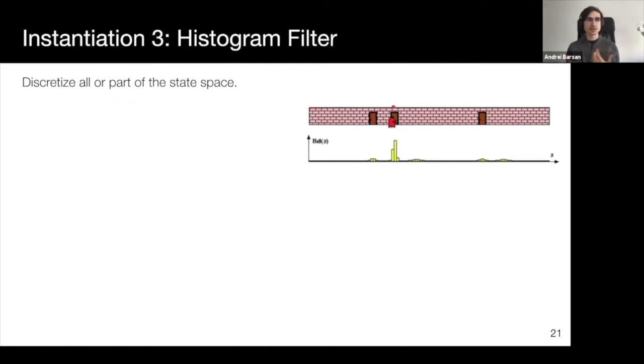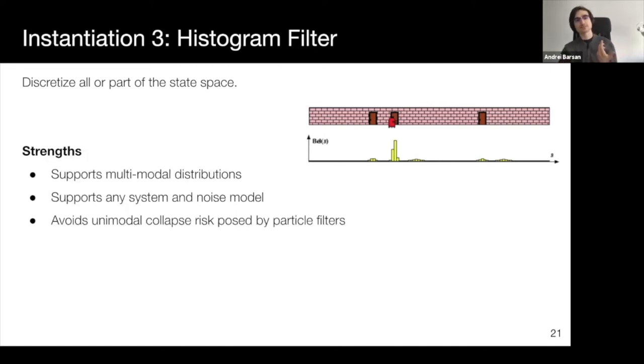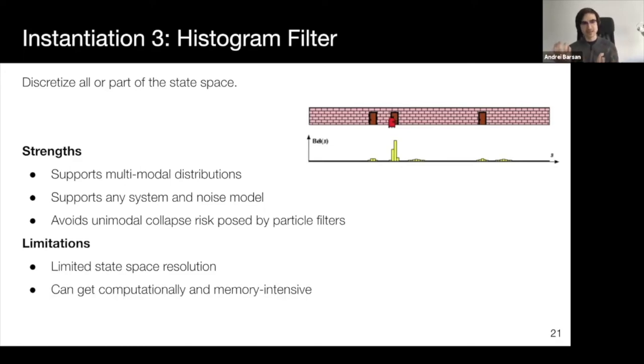Histogram filters simply discretize all or part of the state space into a set of cells. Similar to particle filters, they can support any distribution over the belief space since you're no longer bound by a parametric solution. At the same time, histogram filters can avoid the unimodal collapse risk that particle filters have and eliminate the need to choose the number of particles and tune this hyperparameter. However, by discretizing your state space, you end up limiting the resolution of your estimate. At the same time, you have to store a very large table of probabilities, which can become computationally and memory intensive as the dimensionality of the state space becomes higher. If you have something like a two or three dimensional state space, this is not that big of a deal, but if you have more sophisticated state spaces with 20 or 30 dimensional state spaces, this can become very complex.